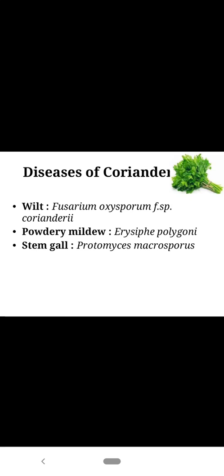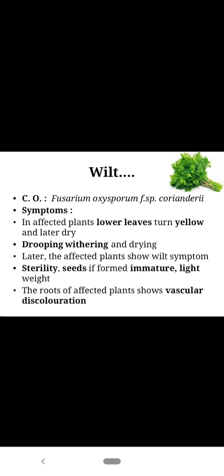Next part: diseases of coriander. Coriander is an annual herb from the family Apiaceae. The fresh leaves are used in cooking for garnishing food dishes and the dried seed is used as a spice called dhaniya in daily cooking. There are three diseases: first, wilt; second, powdery mildew; third, stem gall, which is one of the emerging diseases in coriander. Wilt is caused by Fusarium oxysporum subspecies coriander.